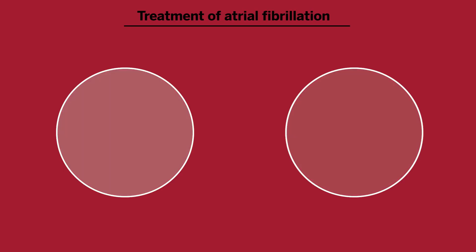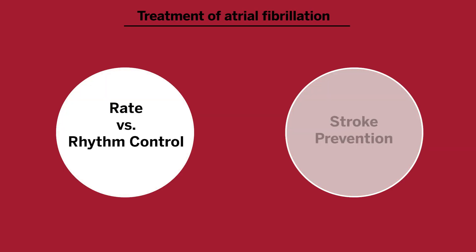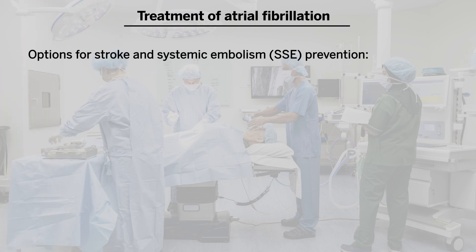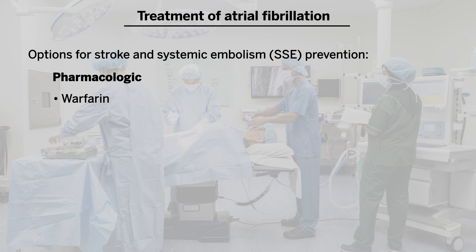The treatment of atrial fibrillation is often divided into two pieces: rate versus rhythm control, which we will not talk about in this talk, but we'll focus on stroke and systemic embolism prevention. There are a few ways to mitigate this risk. The pharmacologic ways would be with anticoagulation — either warfarin or other vitamin K antagonists, the DOACs, which are direct oral anticoagulants, or a heparin product like low molecular weight heparin.